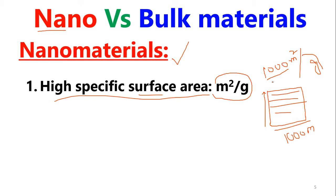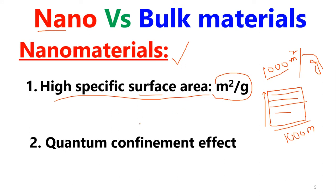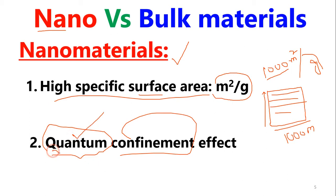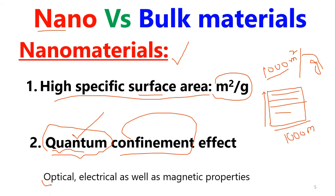The second key characteristic is the quantum confinement effect. When we bring a material down to a certain dimension, this quantum effect becomes significant. It allows us to change the optical properties — such as which wavelengths of radiation the material absorbs, like X-ray, ultraviolet, or visible light — as well as the electrical and magnetic properties of the nanomaterial.